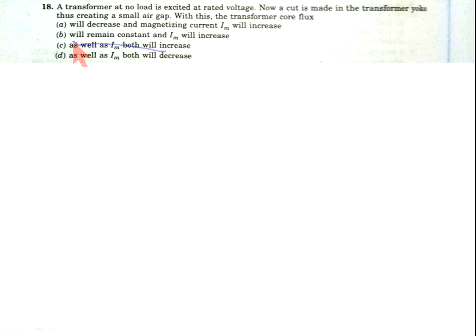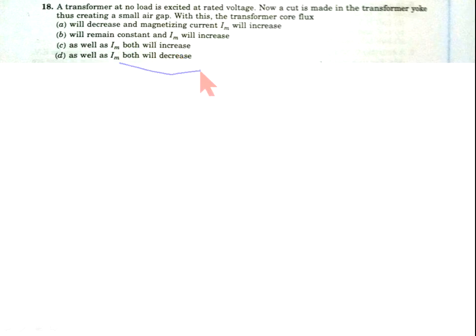Option B: core loss will remain constant and Iam will increase. Option C: core loss as well as Iam both will increase. Option D: core loss as well as Iam both will decrease. Now come to the solution.